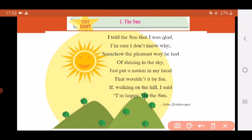Now let us read it line by line. I told the sun that I was glad. So the poet told the sun that he was happy. Glad means happy.